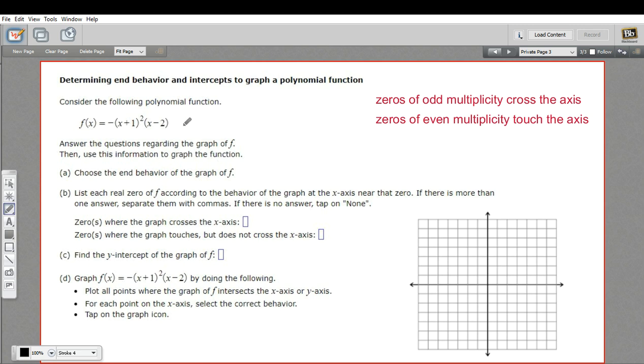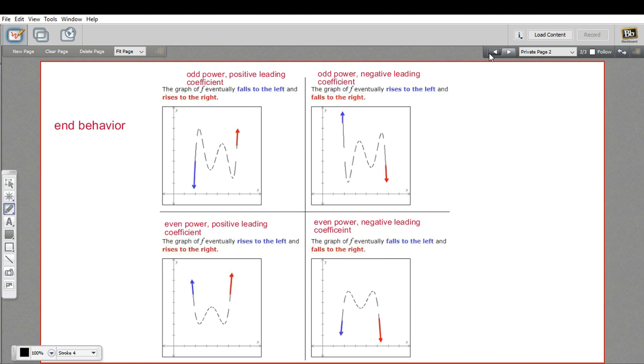So let's talk about end behavior first. First, just to review, the end behavior of a function depends on its highest power and whether that's odd or even. So with functions who have an odd highest power, the end behavior, one's going to go up and one's going to go down.